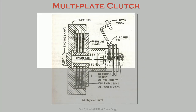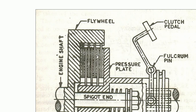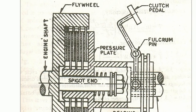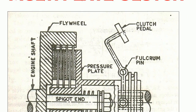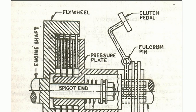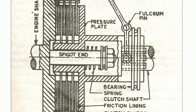Looking at the zoomed view, you can see there are plates and friction material between them. The movement of the pressure plate — backward or forward — is controlled by the clutch pedal. The clutch pedal has a fulcrum pin, and when you press the pedal downward, the bottom part moves anti-clockwise, pushing the collar and pressure plate towards the right side.